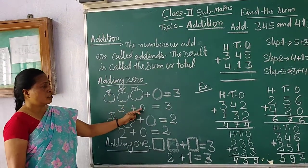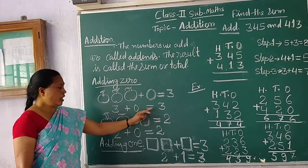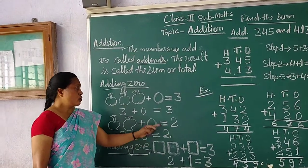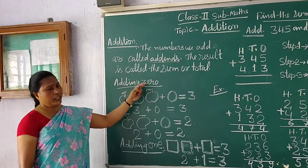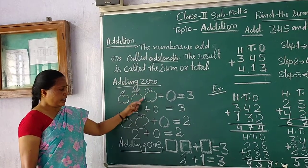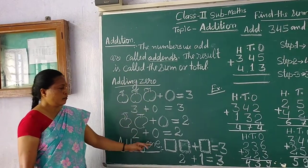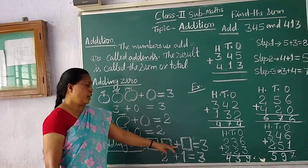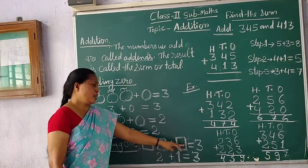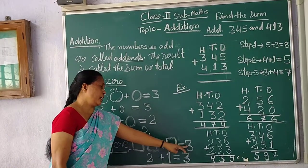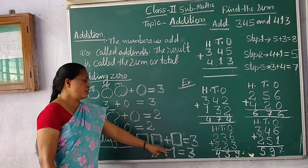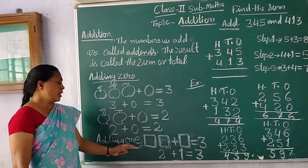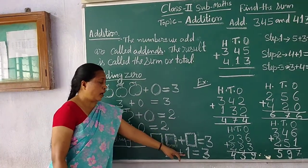Here three plus zero, one to three. And two plus zero, one to two. So this is adding with zero. And next, adding one. Here there are two squares plus one square, equal to three squares.